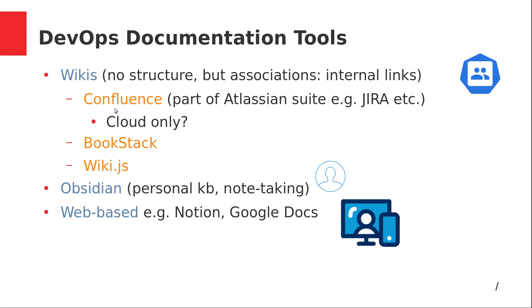Most companies are using Confluence as part of the Atlassian suite. Think about Jira, which is like a ticket system — it integrates well with Confluence. Both products work well together. There are other ones, but those are the main ones from Atlassian.